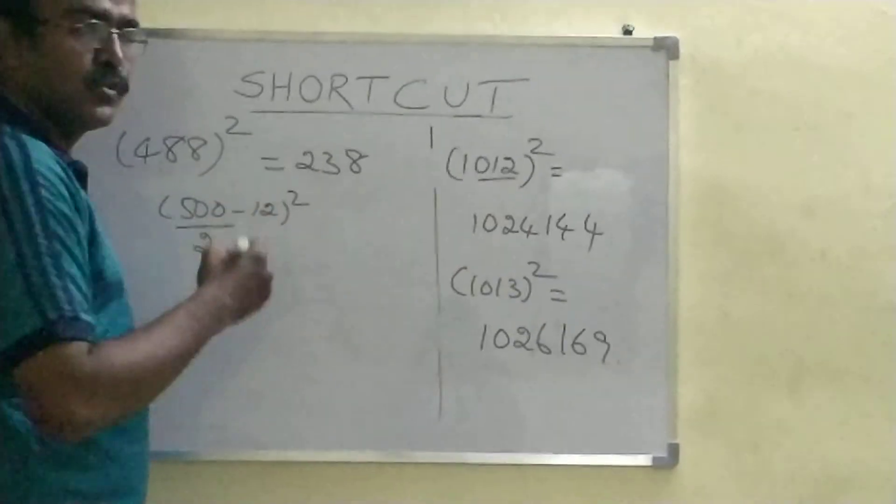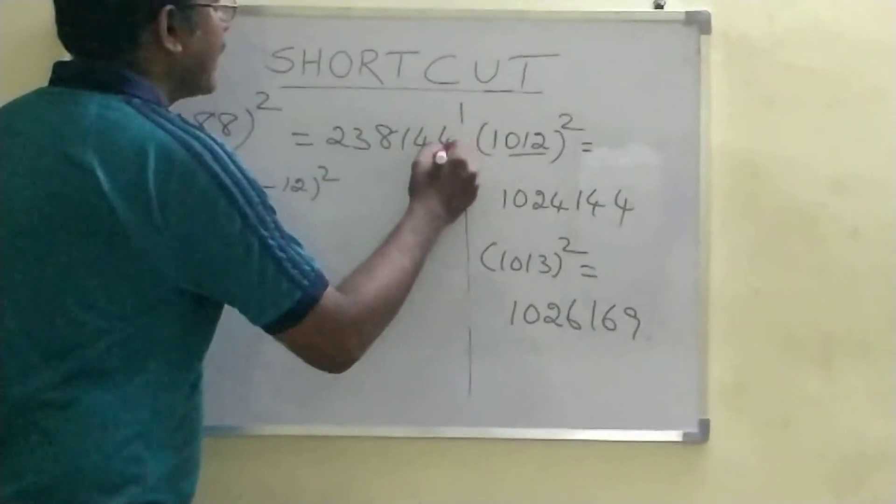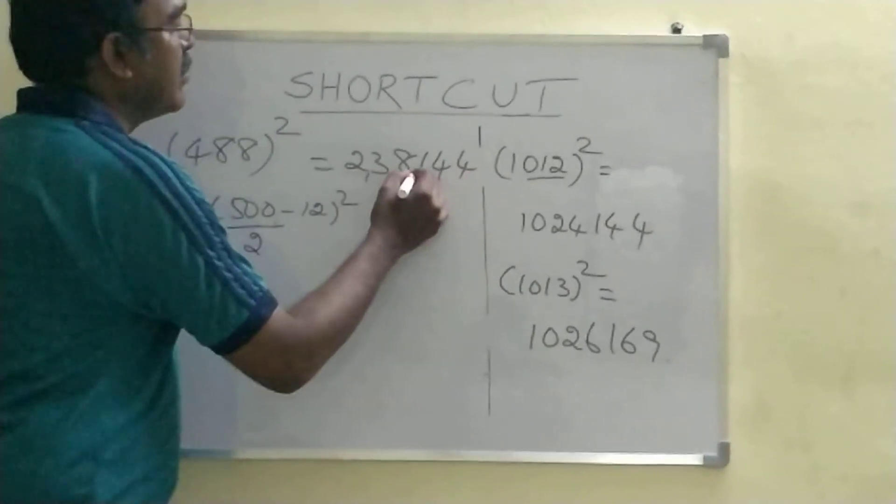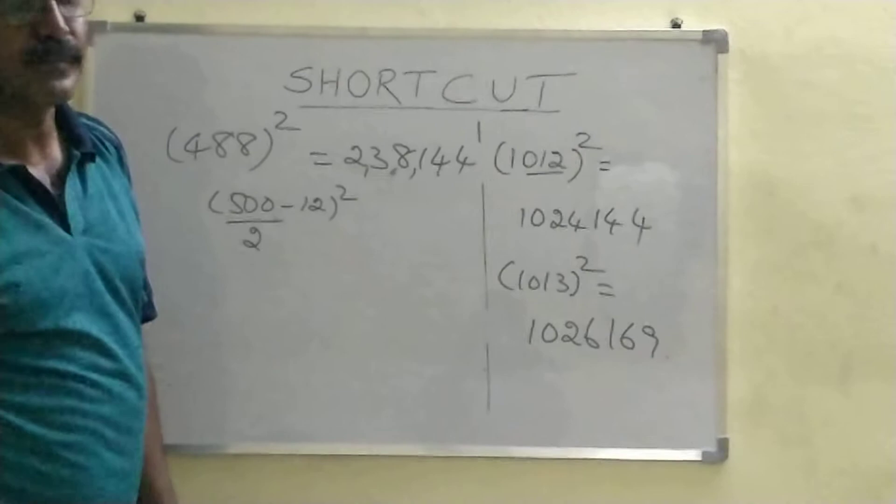What is 12 square? 144. So, my answer is 238,144.